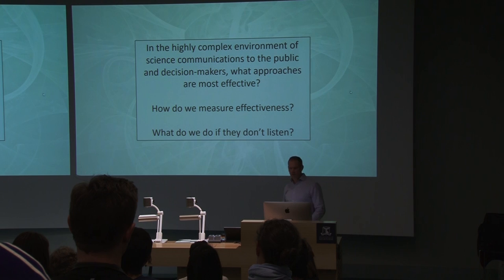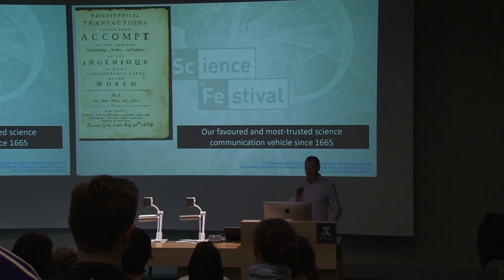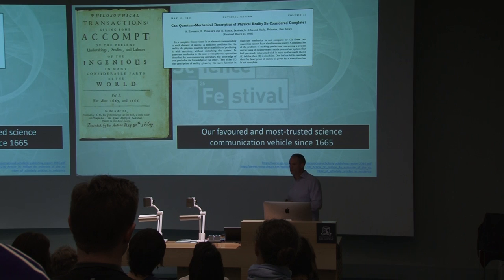In the highly complex environment of science communication to the public and decision-makers, what approaches are most effective and how do we measure effectiveness? And what do we do if they don't listen? For those of us who are scientists, we've been operating in our main communication vehicle since 1665, which is the first scientific journal, Philosophical Transactions. Basically, the process of doing science, writing a research paper, having it undergo peer review, and ultimately publishing a paper that everybody in the world is going to read and cite — but so very few actually do. With the population growth and the number of scientists increasing, we are increasing the number of publications every single year to extraordinary amounts.